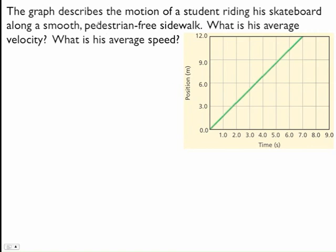So let's do some problems. We have a graph of a student, and he's riding a skateboard along a smooth pedestrian-free sidewalk. What is his average velocity? What is his average speed?